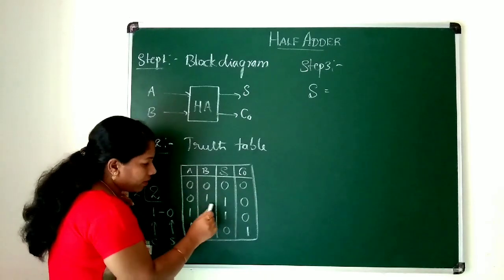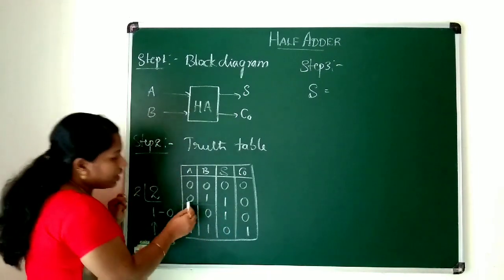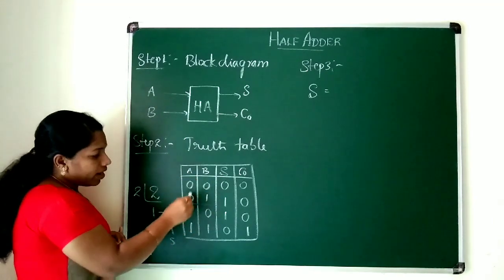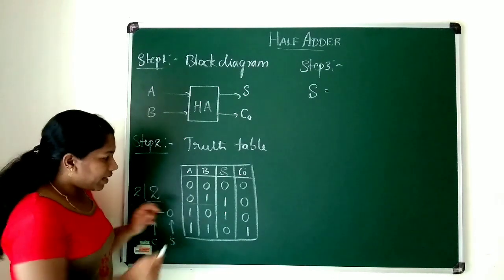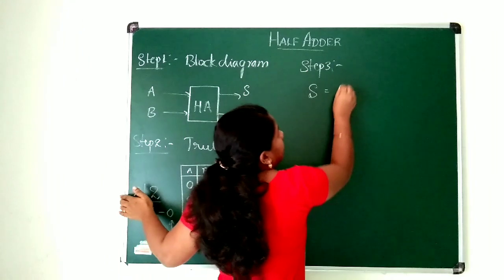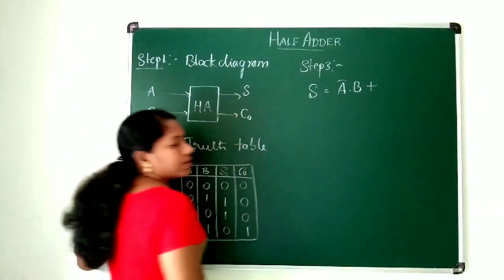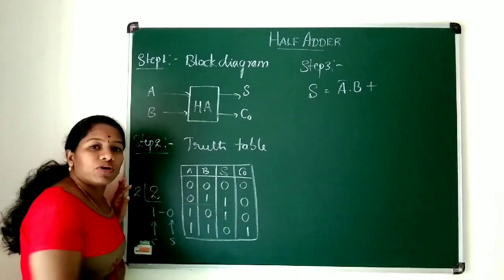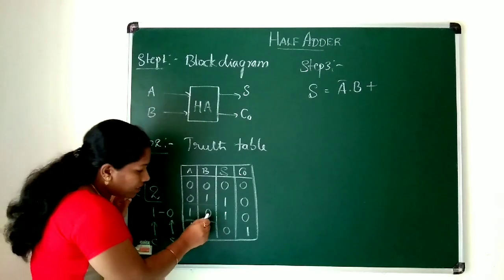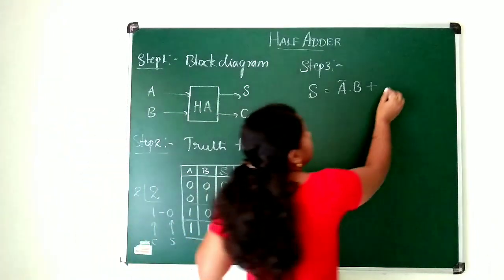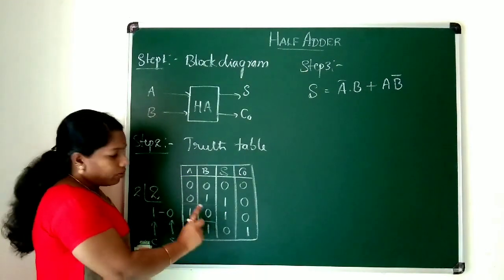The first sum entry is 0, so we skip it. The next entry is 1, so we take it. The corresponding values are A=0 and B=1. If a value is 0, you represent it with its complement; if it is 1, you take the variable as it is. So we get Ā·B. For the next term, we use plus and the next 1 has A=1 and B=0, giving us A·B̄. There are only two 1s in the sum column, so the sum expression is Ā·B + A·B̄.